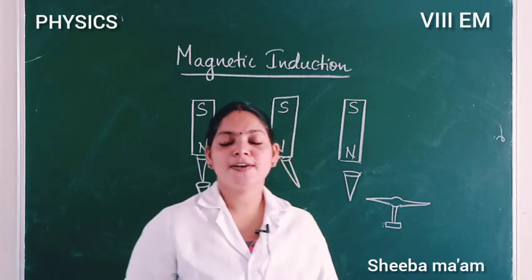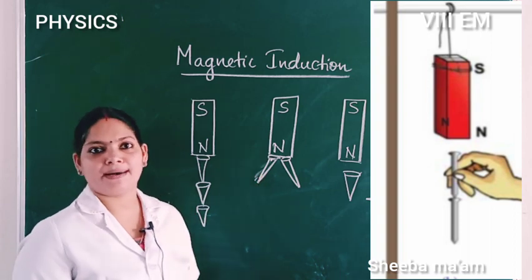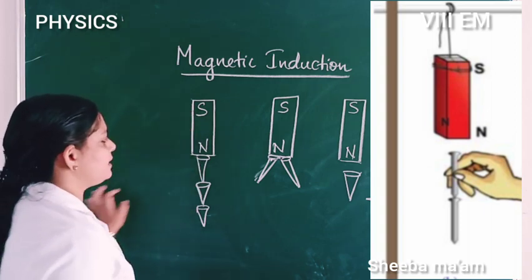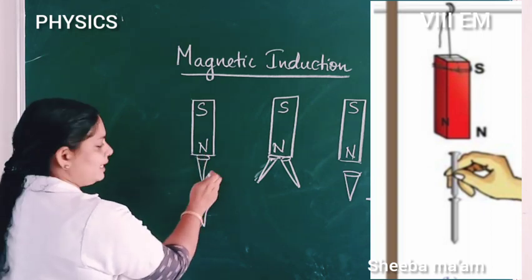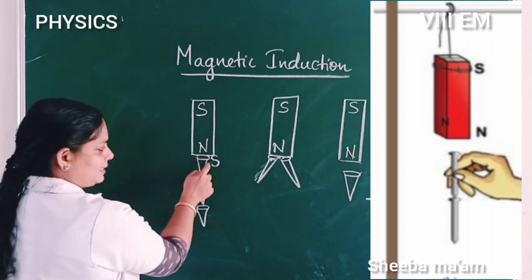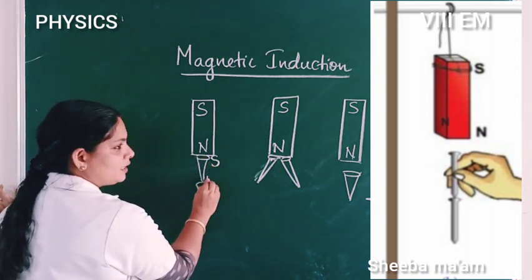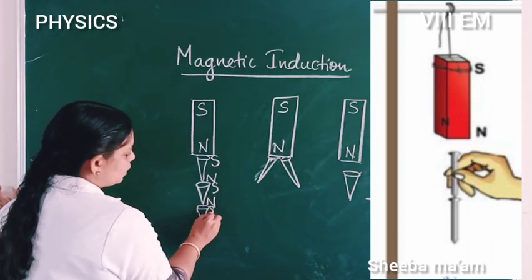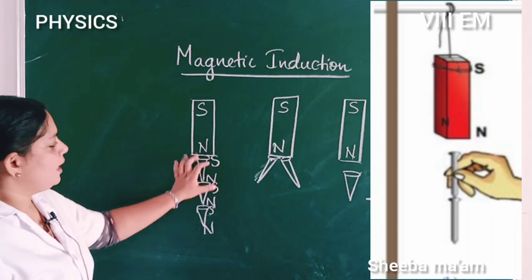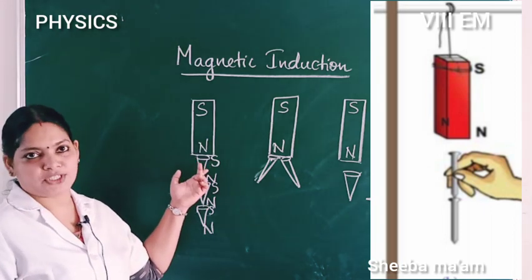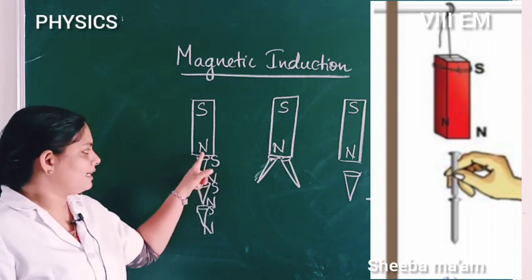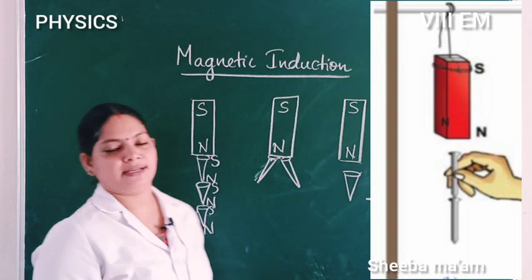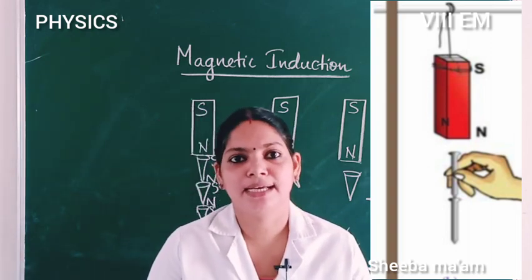Now we mark the poles. The first figure is a magnet. We mark the poles. Unlike poles are attracted. This end is north, this end is south, this tip is north, and this south end becomes north. Always unlike poles are created — unlike poles are created at the nearer end of the magnet.